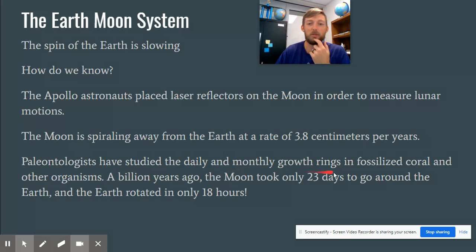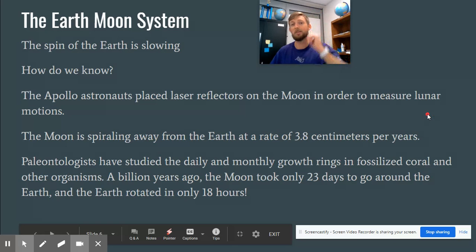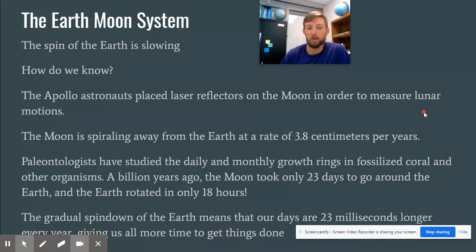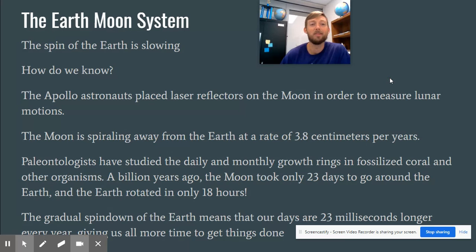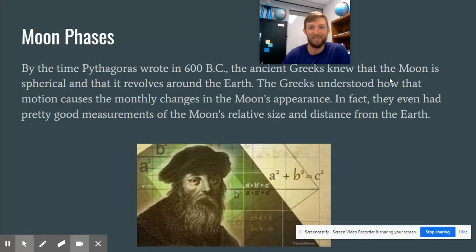But we know that it's changing because paleontologists were able to look at fossilized coral and other organisms. And so because coral grows so slow, they can look at the different rings in the coral and judge that a billion years ago, the Moon only took 23 days to go around the Earth, which would shrink our month significantly. And the Earth rotated at only 18 hours. So the day was quite a bit shorter, six hours shorter than it is today. And as far as the Earth's slowing down, our days are about 23 milliseconds longer every year. So yes, it is slowing down. Is it a significant amount? No. But it gives you more time to get stuff done, but not really.